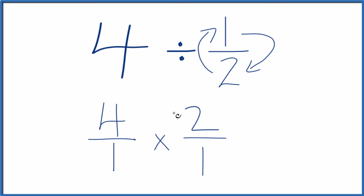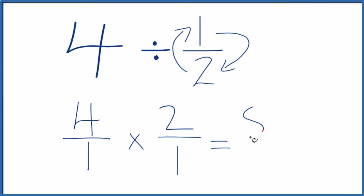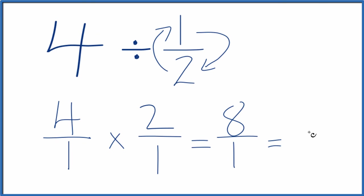So now when we multiply fractions, we multiply the numerators and then the denominators. That'll give us our answer. 4 times 2 is 8. 1 times 1 is 1. And 8 divided by 1, that's just 8.